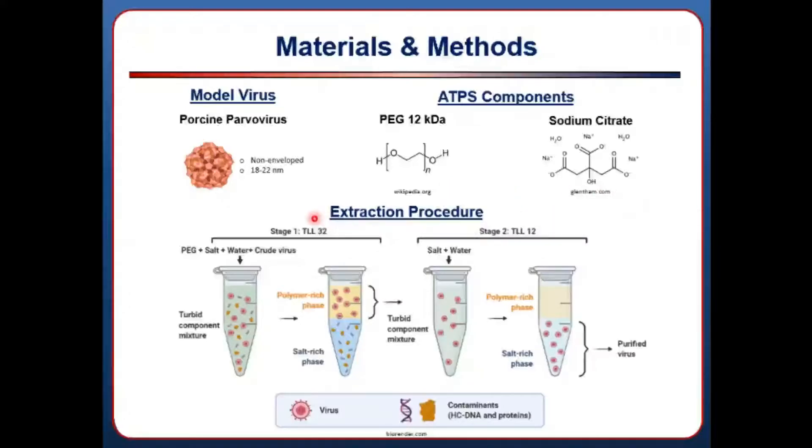Here's a schematic of our extraction process. We add PEG, sodium citrate, water, and crude virus broth to a tube, mix, and separate the phases. At this system composition, the virus prefers the top phase, while the contaminating proteins and DNA partition to the bottom. We have a relatively pure virus at this point, but it is in a very viscous polymer that's difficult to process further. To recover the virus, we use a second stage of ATPS at a different system composition that causes the virus to partition to a gentle salt solution ready for final polishing.